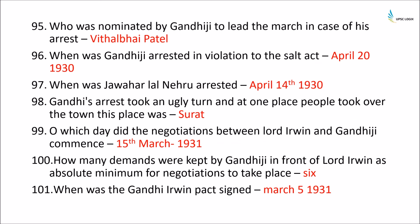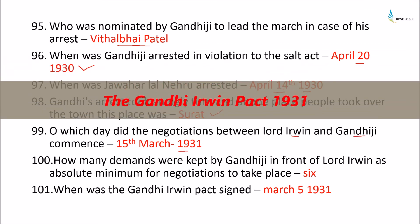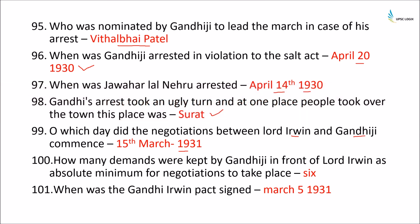In case Gandhiji was arrested, he nominated Vithalbhai Patel to lead the Dandi March. Gandhiji was arrested in violation of the Salt Act on April 20th, 1930. Jawaharlal Nehru was also arrested on April 14th, 1930. Gandhiji's arrest took an ugly turn when people took over the town of Surat. On 15th March 1931, negotiations began between Lord Irwin and Gandhiji, with Gandhiji placing six demands as an absolute minimum. The Gandhi-Irwin Pact was signed on March 5th, 1931.